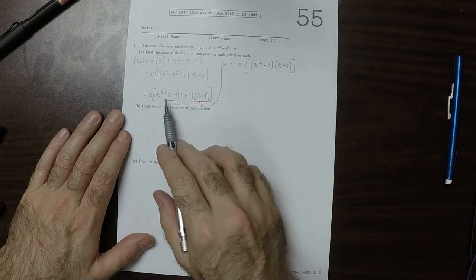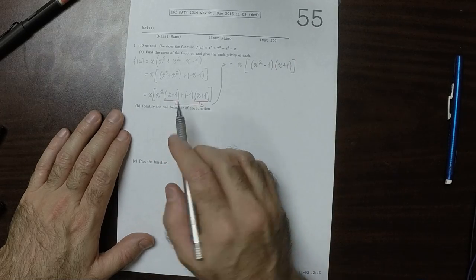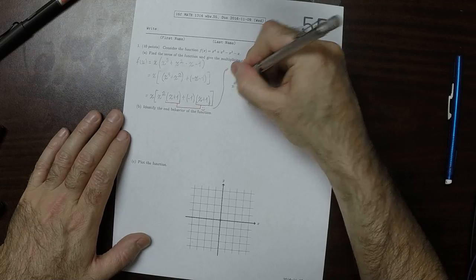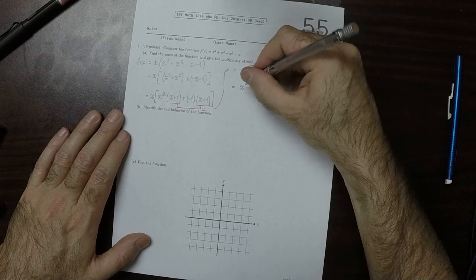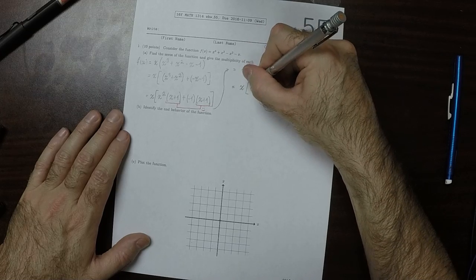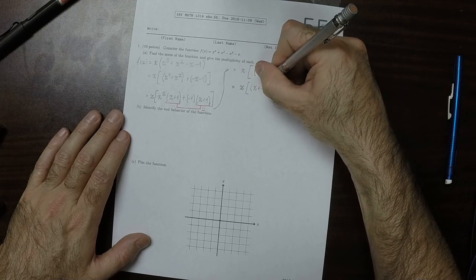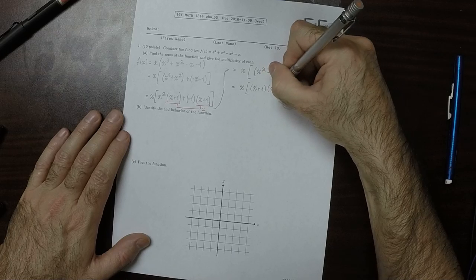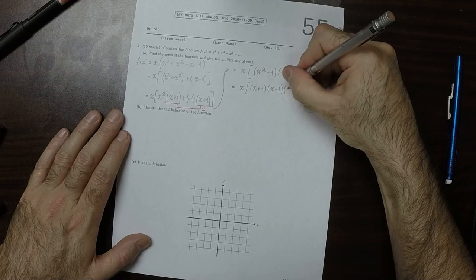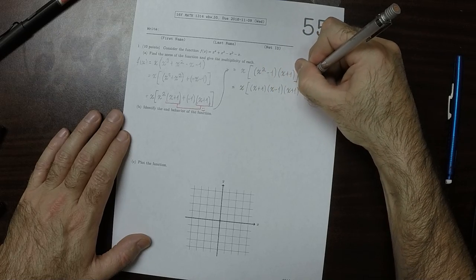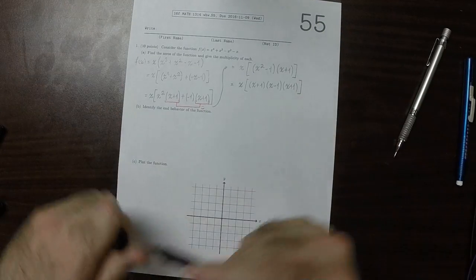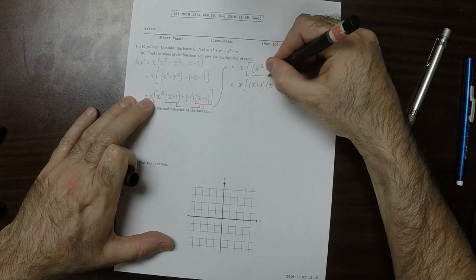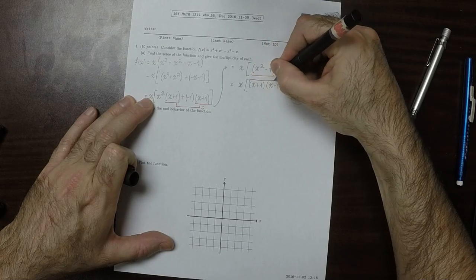The x plus 1 factors out, and you have x squared minus 1. And then x squared minus 1 is the difference of squares, so it factors. So this is x times x plus 1 times x minus 1 times x plus 1. So this x plus 1 is that x plus 1, and this x squared minus 1 factored into the difference of squares.